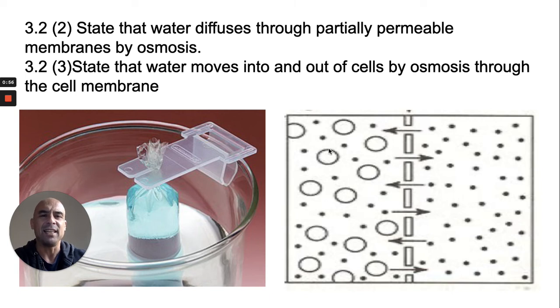Now, water moves into and out of cells by osmosis through the cell membrane because the cell membrane itself is partially permeable.